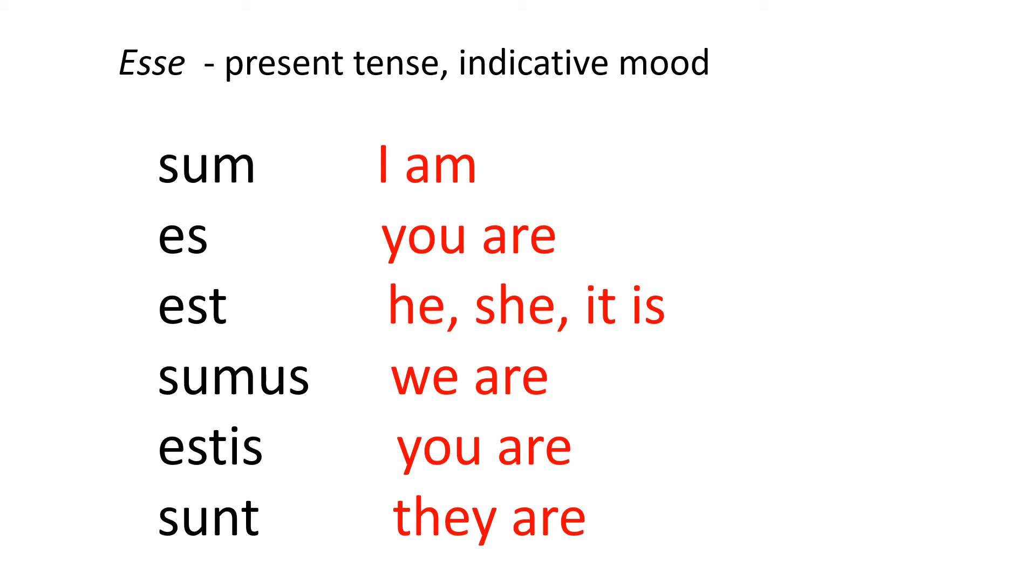This is the conjugation of the verb esse in the present tense indicative mood. The verb esse is the verb to be in Latin. We see the first form here is the first person singular, and it means I am. Now with Latin, the verb contains just as one word right here these two English words.